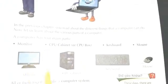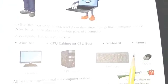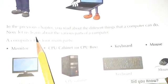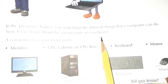Students, we all know the parts of a computer — monitor, CPU, keyboard, and mouse. We have learned this in our previous classes. In the previous chapter, you read about the different things that a computer can do. Now let us learn about the various parts of a computer.